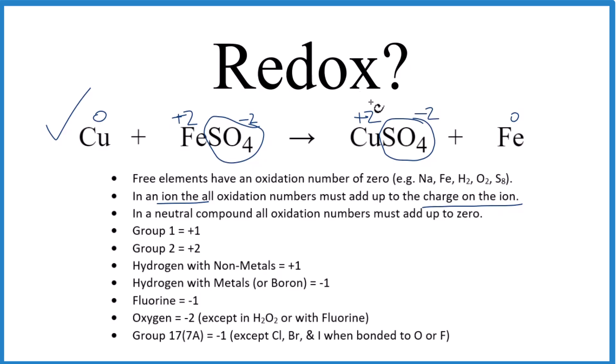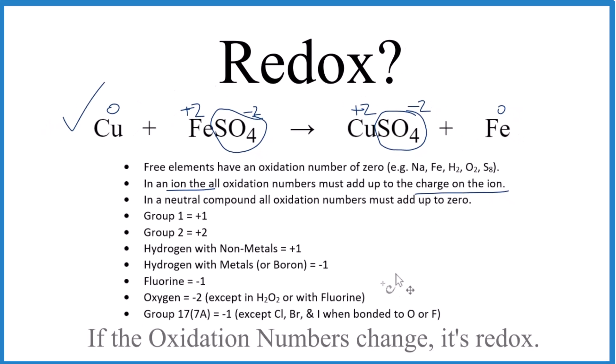So the key here, because these oxidation numbers changed, we know it's a redox reaction. So to wrap up, if the oxidation numbers change, it's a redox reaction. And you can use these rules to figure out what those oxidation numbers are in the first place. This is Dr. B. Thanks for watching.